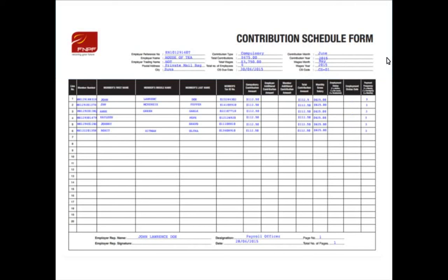It's important to note that most of the details in all the columns in the CS form will remain unchanged unless there are changes to the contribution or wages paid amount, and if there are new employees. The calculation of the contribution amount applies to the dollars and cents in the gross wages, and not just the dollars as has been the practice. The total contribution amount in the CS header and the CS details must match. Forms that are incomplete or have incorrect information will not be accepted by FNPF. Lastly, you will have to ensure you or your authorized representative sign off on the form. We hope this video will assist you when filling in your CS form. If you have any queries, please contact FNPF.